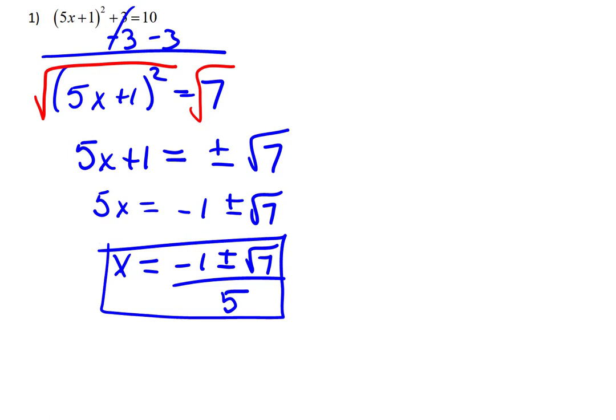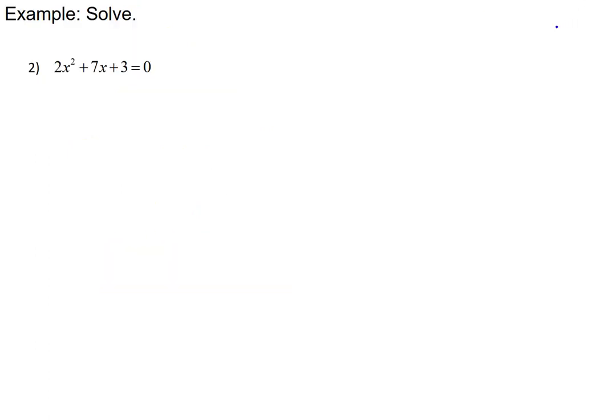Let's look at another example where we want to solve, this time the equation is 2x² + 7x + 3 = 0. We'll notice the quadratic form, and that it's different from our first example, in that there is no x that's buried in parentheses squared. This time it's just an x squared showing up as part of this trinomial.